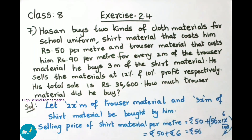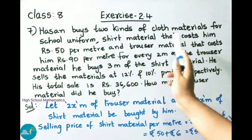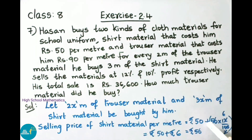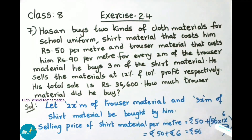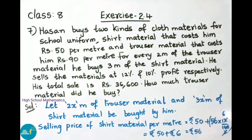Now let us find the selling price of shirt material per meter. The shirt material cost is 50 rupees per meter with 12 percent profit. So cost price 50 rupees plus 50 into 12 by 100 gives 50 plus 6, which equals 56 rupees.